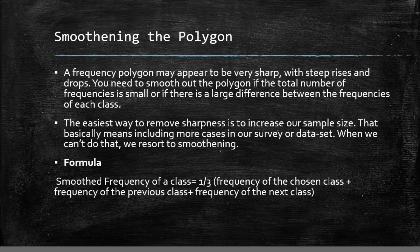You may have noticed that the polygon was not the smoothest one you have seen. That happens if the total number of frequencies is too small which basically means the sample size is too low. Another reason for that is that there might have been a great variation between the frequencies of different classes.